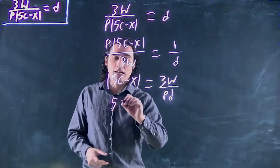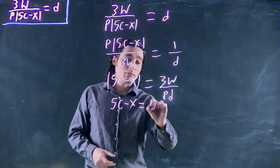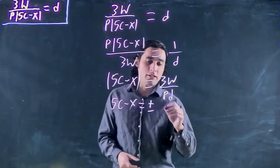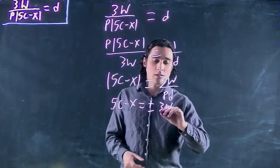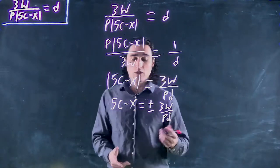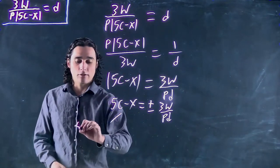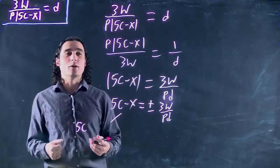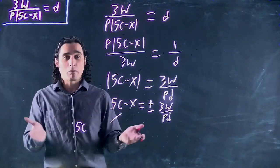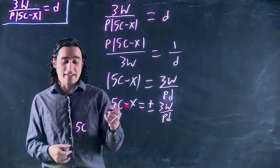So what do we get? 5c minus x equals plus or minus this mass right here, 3w over pd. Great. As always, split that into two possible solutions. So 5c, oh, by the way, I think I forgot to mention the whole way, we're solving for x. Important to know, we want to solve for x.